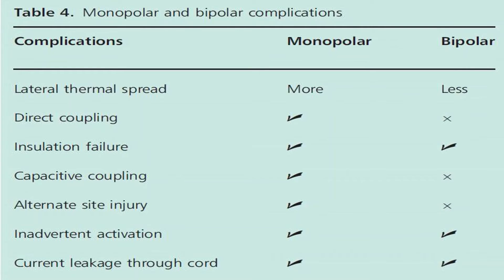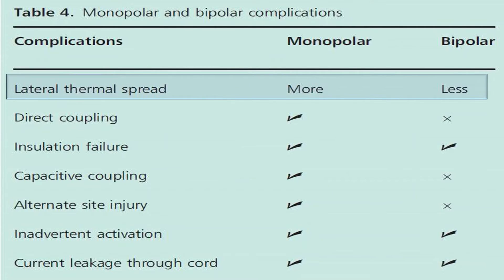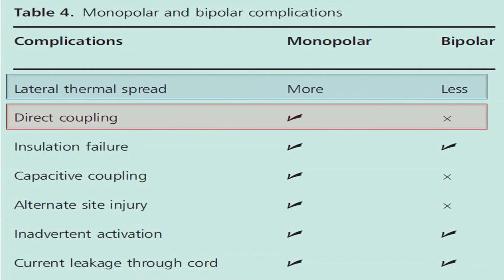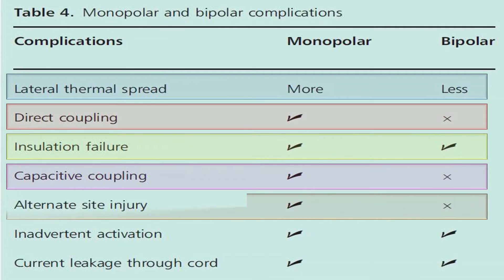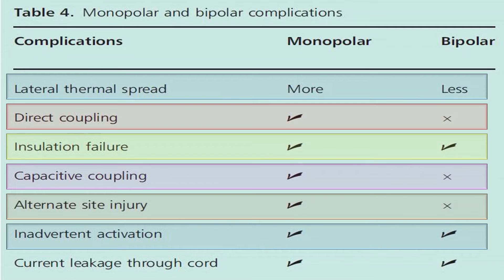Different complications of monopolar and bipolar instruments are presented. Lateral thermal effects are more pronounced with monopolar and less with bipolar. Direct coupling is present with monopolar and absent with bipolar. Insulation failure is present with both types. Capacitative coupling is present in monopolar and absent in bipolar. Alternative site injury is present in monopolar and absent in bipolar. Inadvertent activation and current leakage through the cord are both present in monopolar and bipolar instruments.